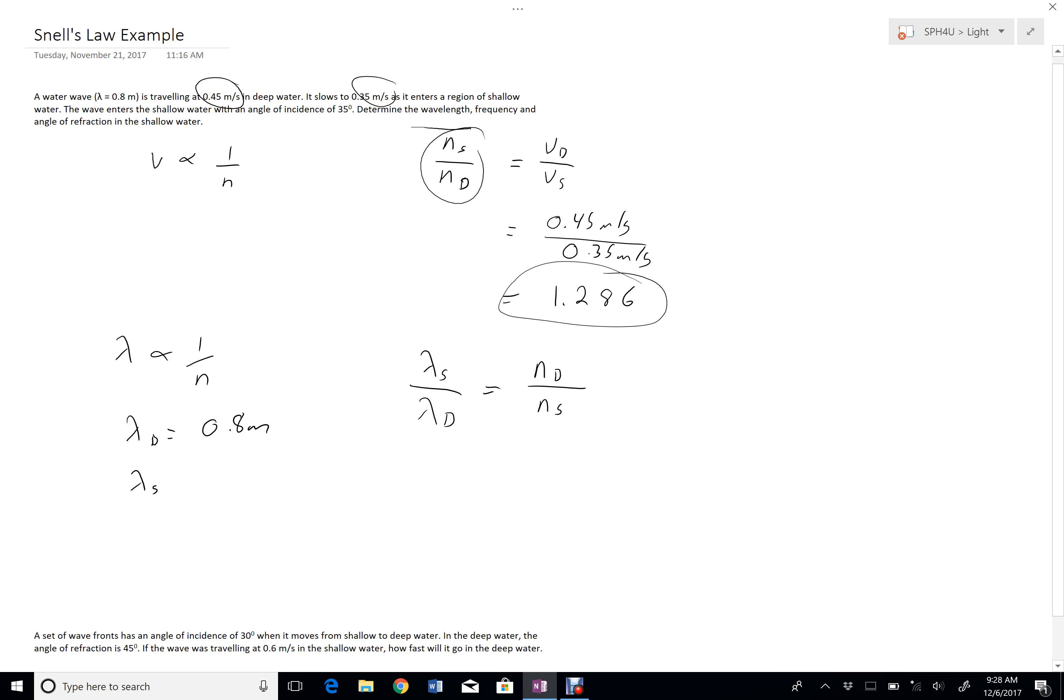I have S over D here. Now I have D over S. So instead of putting 1.28 on this side, I'm going to put the inverse, 1 over 1.286. Lambda in the shallow water is what I'm looking for. Lambda in the deep water is 0.8 meters. And now I can solve for lambda. And I get my new wavelength to be 0.622 meters. So that's the wavelength.